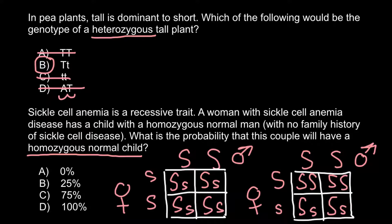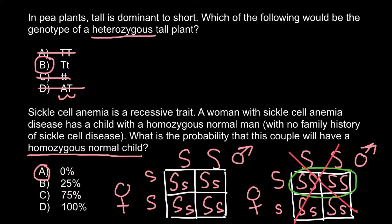In the second Punnett square, homozygous normal would be 50% of the progeny, but there is no answer choice for 50%. However, answer A states 0%. Going back to our first Punnett square — where the female is homozygous recessive — we actually do not find 100% either among the answer choices. So the correct answer is A: this couple has zero chance of having a homozygous normal child because the mother is homozygous recessive and the father is homozygous dominant.